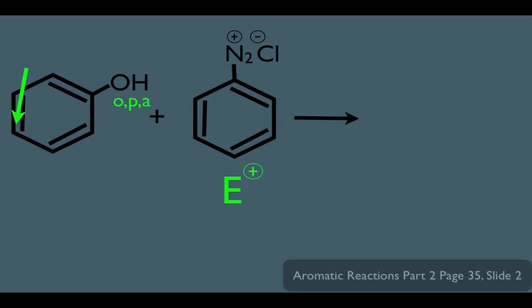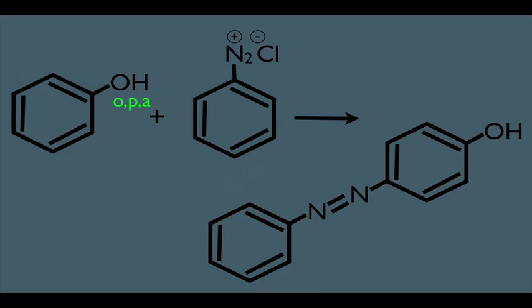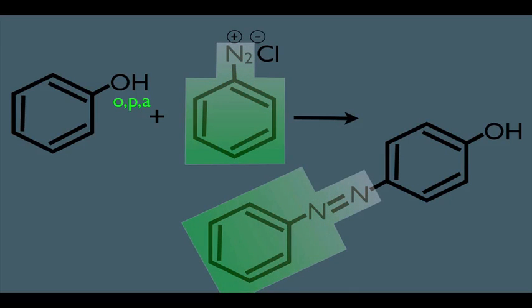So that means the product of our reaction is this right here. Notice the diazonium is right here, and it is para to the OH group. So all we're really knowing here is that diazoniums could act as simple electrophiles in electrophilic aromatic substitution.